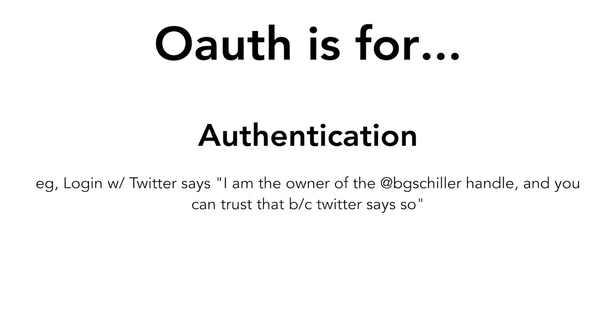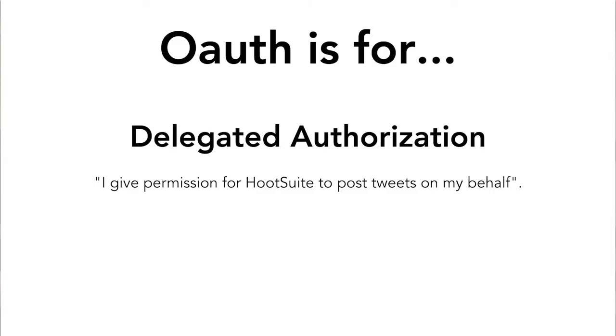OAuth is for authentication. For example, a 'login with Twitter' button says 'I am the owner of the @BGSchiller handle, and you can trust that because Twitter is saying so.' It's also for delegated authorization — 'I give permission for Hootsuite to post tweets on my behalf.' We're delegating authority to take some action and giving it to some other program or website we trust. When I log into Hootsuite, I'm saying I trust this company enough that I don't think they'll make bogus tweets — I'm willing to give them permission to create tweets on my behalf.